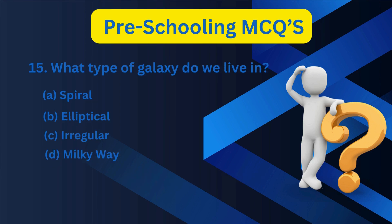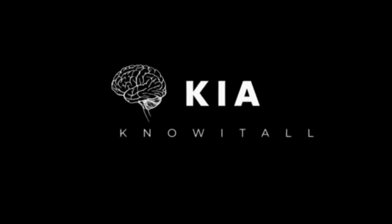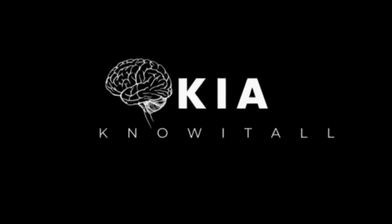15. What type of galaxy do we live in? A. Spiral, B. Elliptical, C. Irregular, D. Milky Way. A. Spiral.